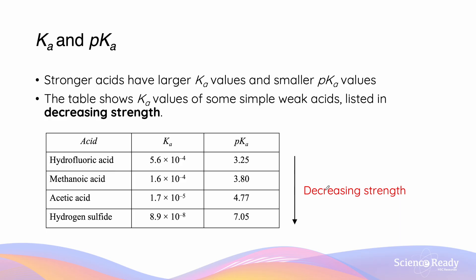Here we have Ka and pKa values for common weak acids like hydrofluoric acid, methanoic acid, acetic acid, and hydrogen sulfide. We can see that the larger the pKa, the weaker the acid. This table shows the inverse relationship between increasing acid strength and decreasing pKa.